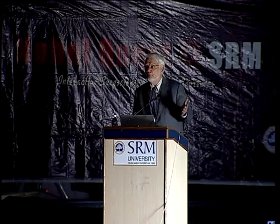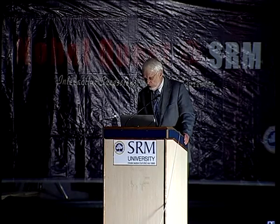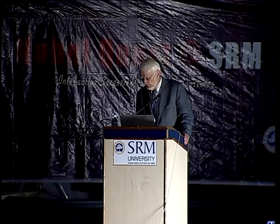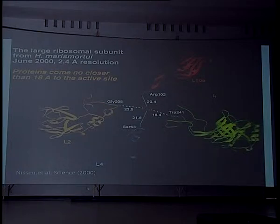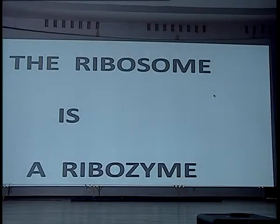His rationale was: how could the machine that makes proteins have been a protein before there was a machine to make proteins? It's the chicken and the egg problem — which came first. And so he hypothesized that it was entirely RNA. And of course, as most of the things that Francis said, he was right. When we looked, there weren't any proteins closer than 20 angstroms, and now there are some proteins a little closer, but not much. So we concluded that indeed the ribosome is a ribozyme.